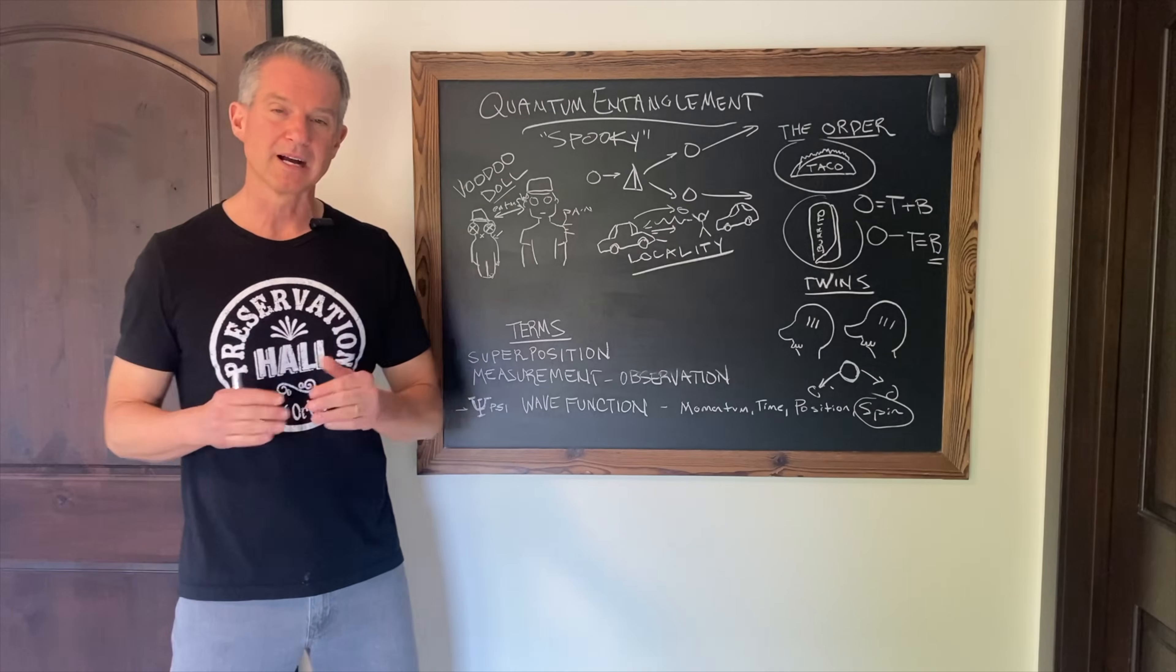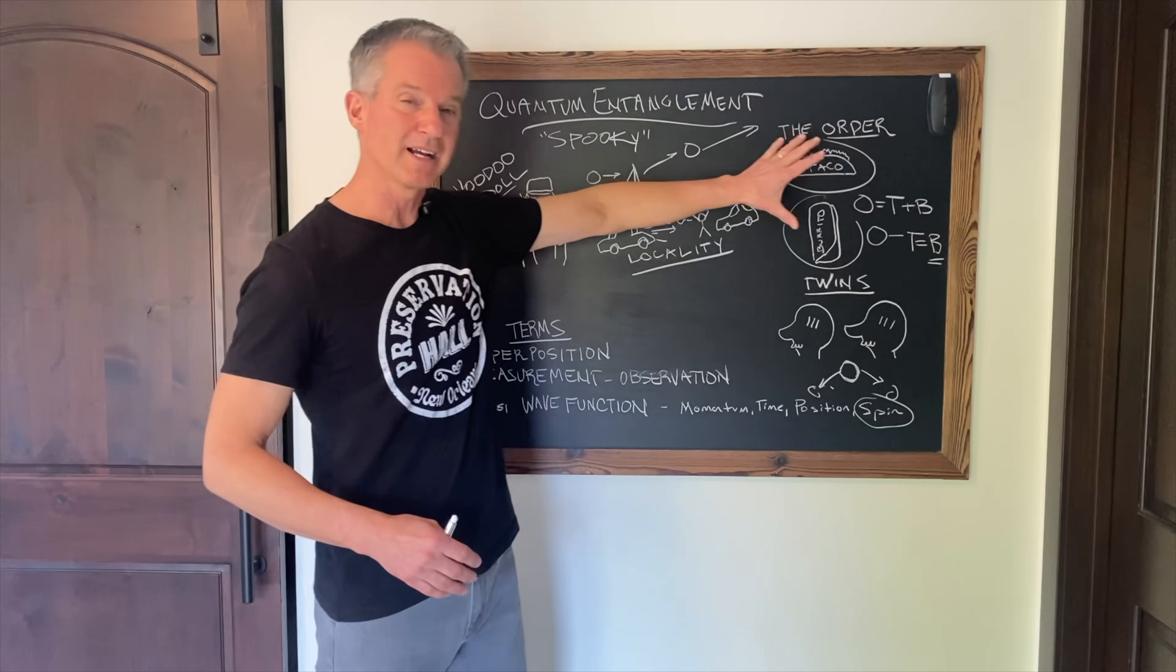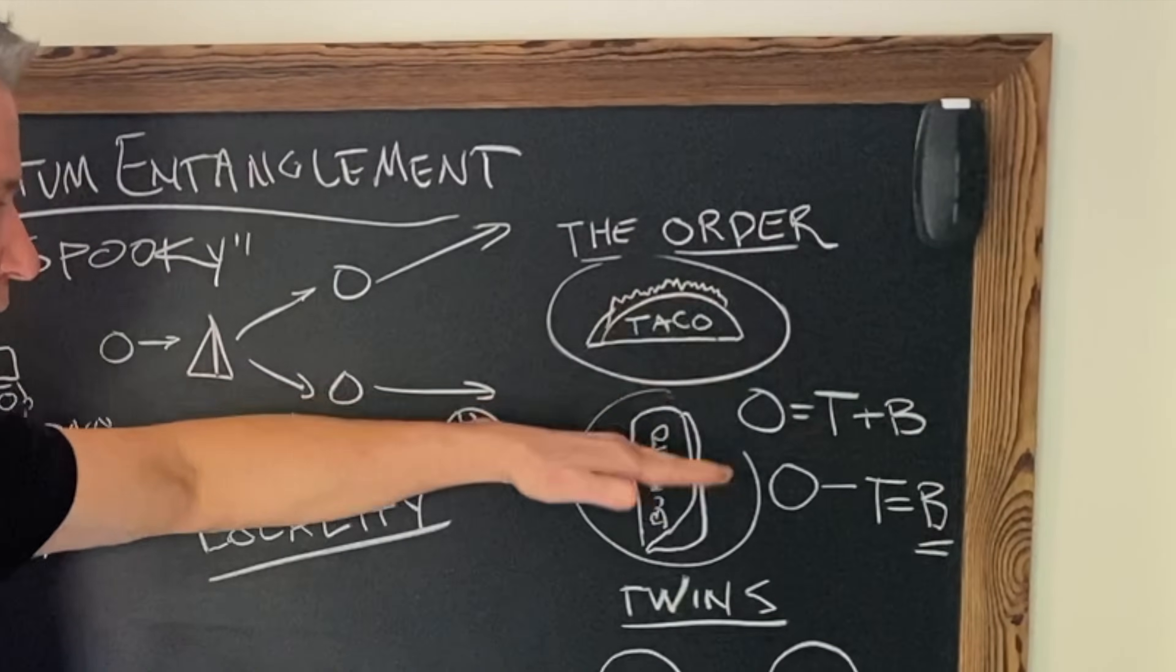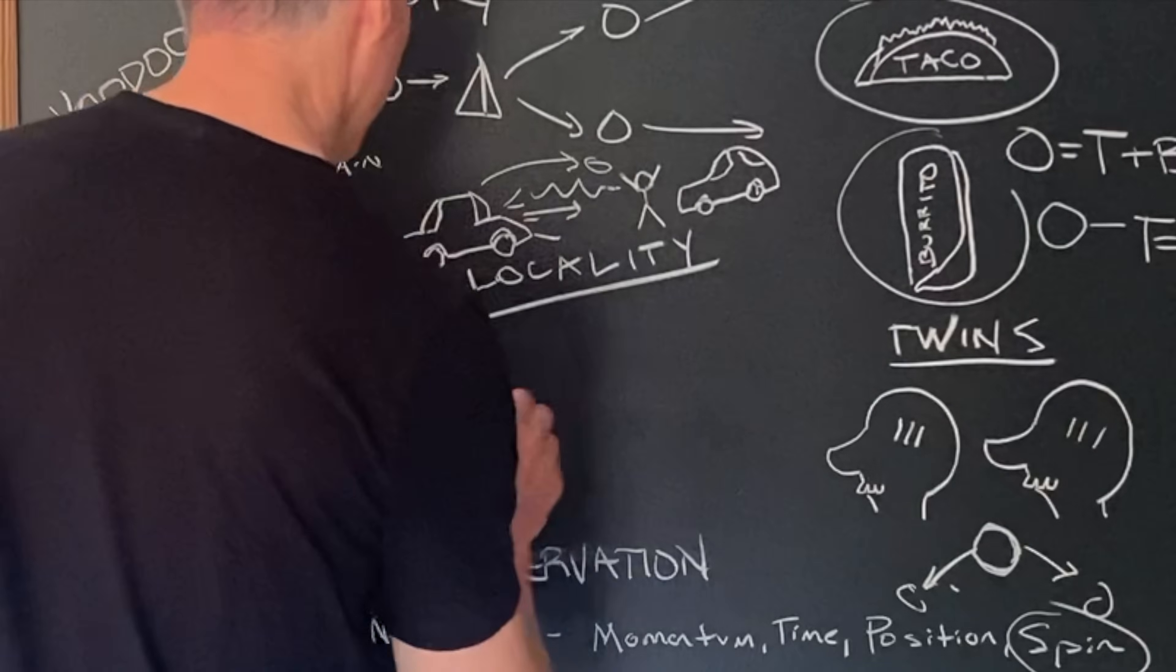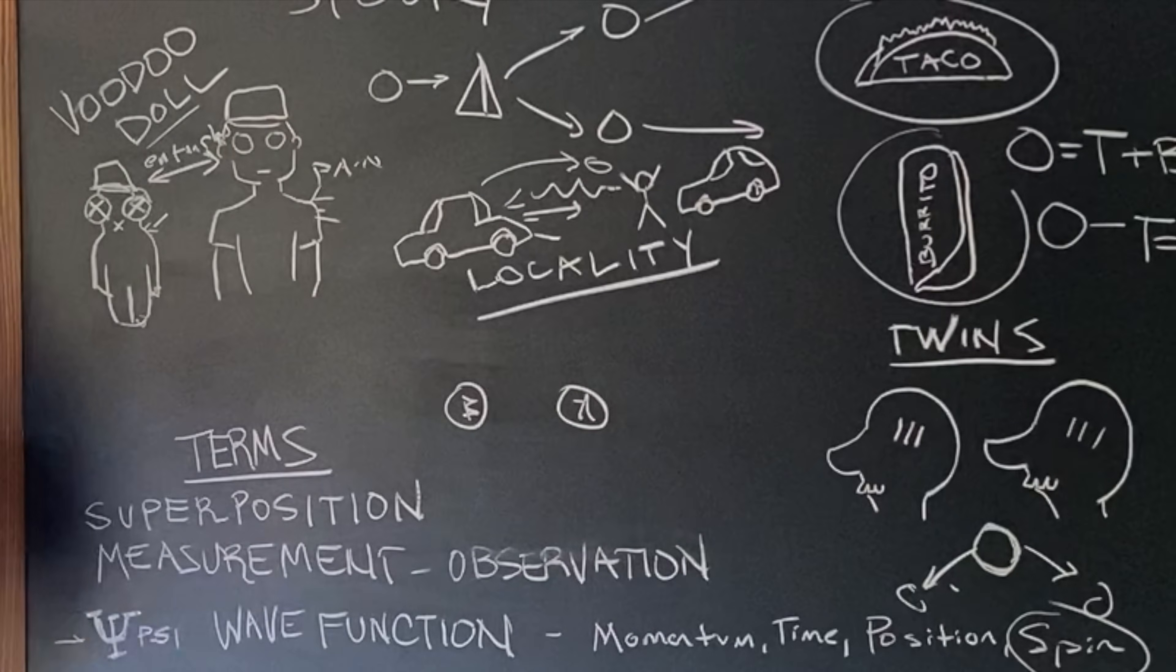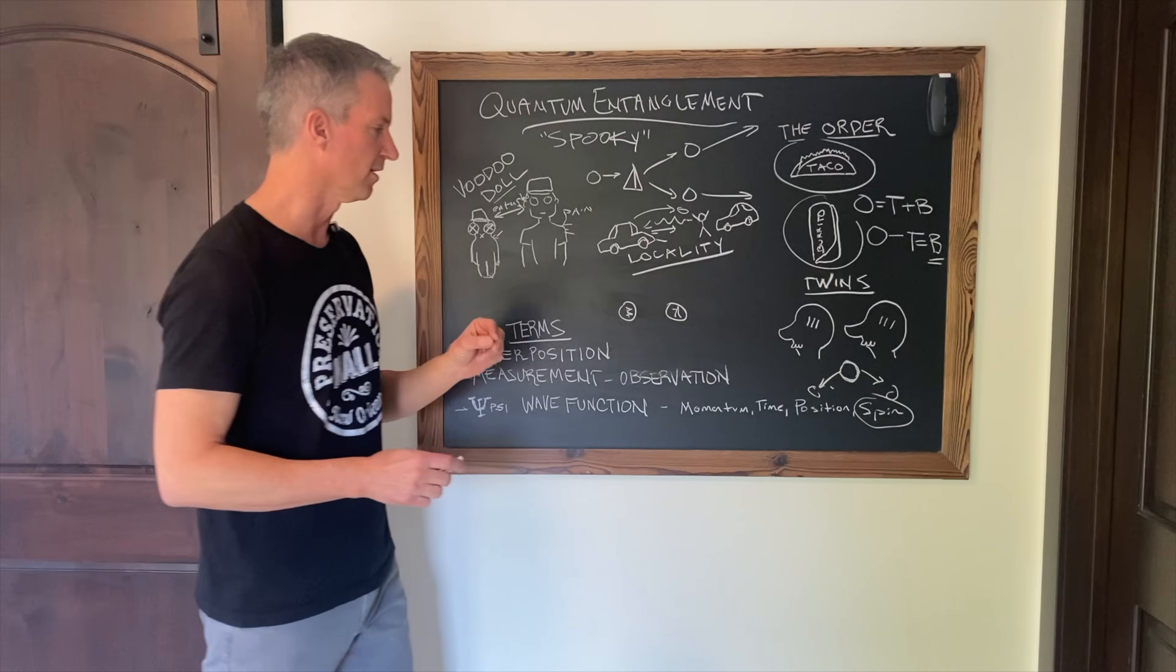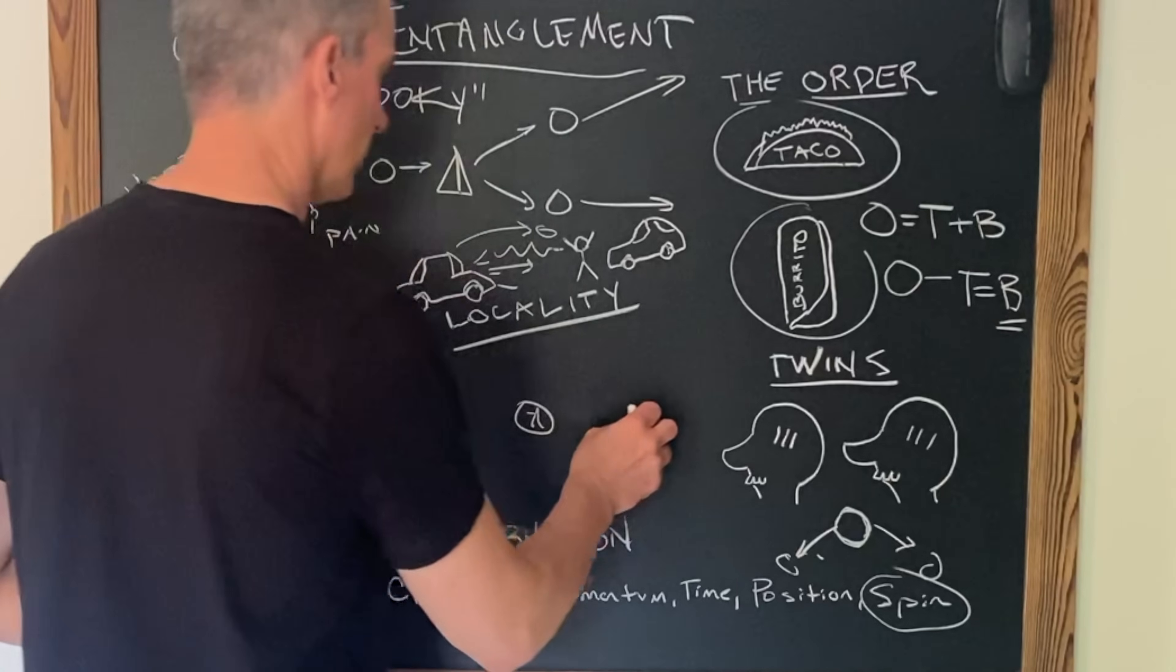When two particles become entangled, they can be described by the same wave function. Go back to my analogy about the order. This entire system, this taco and burrito, that system we call the order itself, were described by one formula. Well, two particles, particle A and particle B, can be described by the same wave function when they are entangled. So let's just take the most simple aspect of the wave function, the spin. Let's say that the wave function describes the total spin of this system as zero.